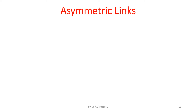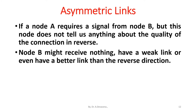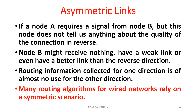Asymmetric links: if a node A receives a signal from node B, this does not tell us anything about the quality of the connection in reverse. Node B might receive nothing, have a weak link, or even have a better link than the reverse direction. Routing information collected for one direction is of almost no use for the other direction. Many routing algorithms for wired networks rely on a symmetric scenario.